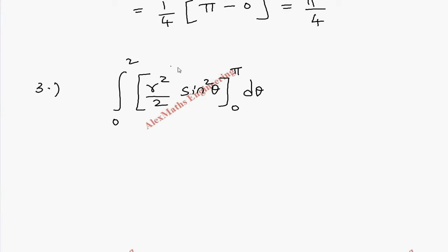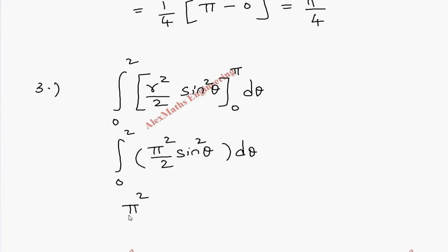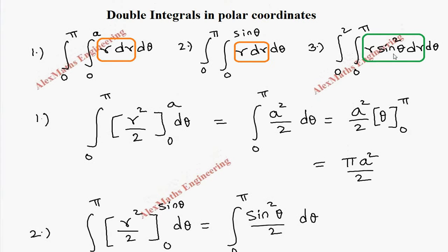When we substitute the upper limit, it becomes π² / 2 · sin²θ, since we are putting the limit for r. When we put the lower limit it becomes 0. However, after integration we cannot substitute a limit for θ as 0 to 2, because the limit for θ should be an angle expressed in terms of pi. So we need to rearrange the correct order of integration from the beginning.